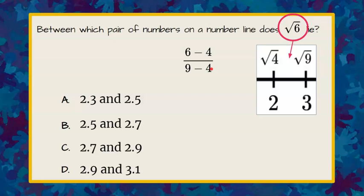So now let's simplify our ratio. 6 subtract 4 is 2. 9 subtract 4 is 5. 2 fifths can be rewritten as the decimal 0.4.